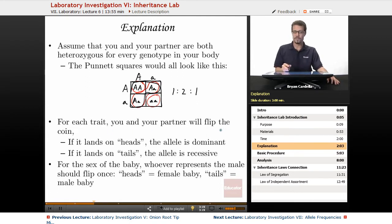For each trait, you and your partner will flip the coin. If it lands on heads, the allele is dominant for that individual in terms of what they're passing on. So if both people flip heads, you're getting homozygous dominant. If one of you flips heads and one of you flips tails, it'll be heterozygous. If it goes the other way, it ends up being the same genotype. That's why there's a 50% chance of that happening. If you both flip tails, you're going to get that homozygous recessive case.